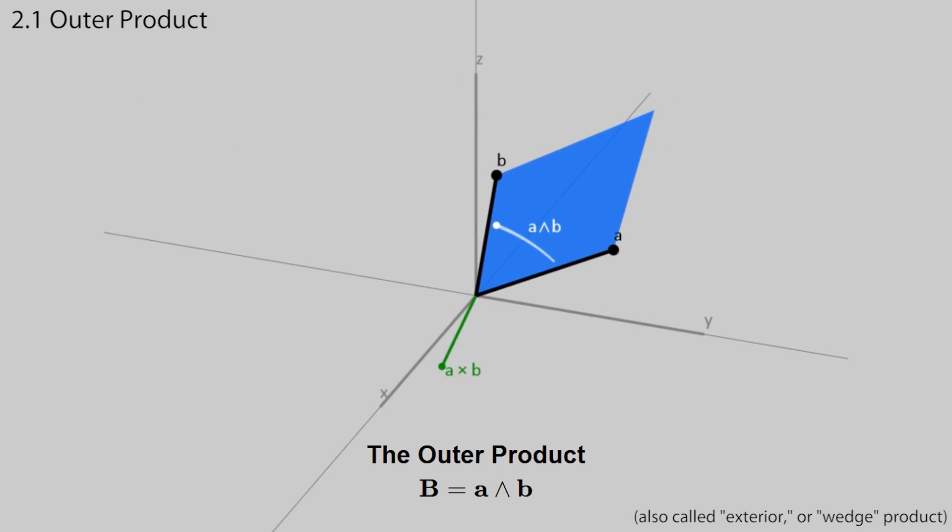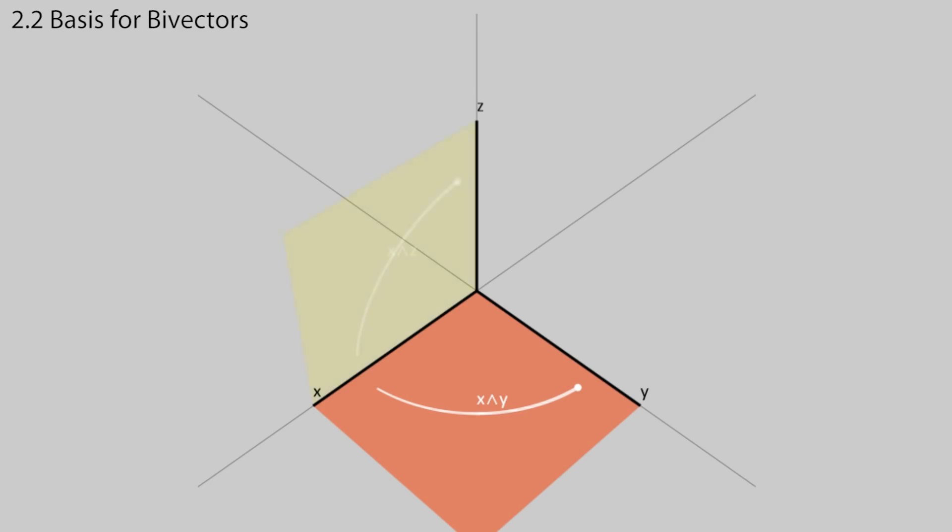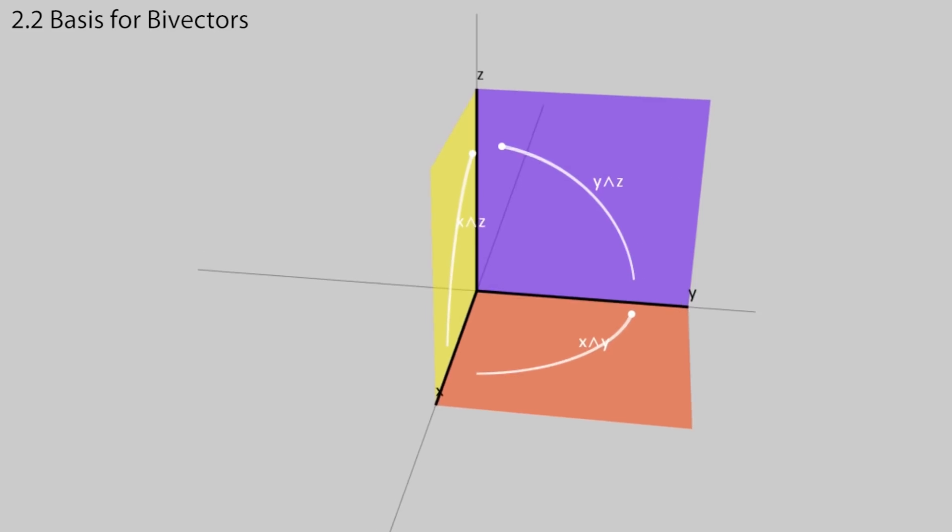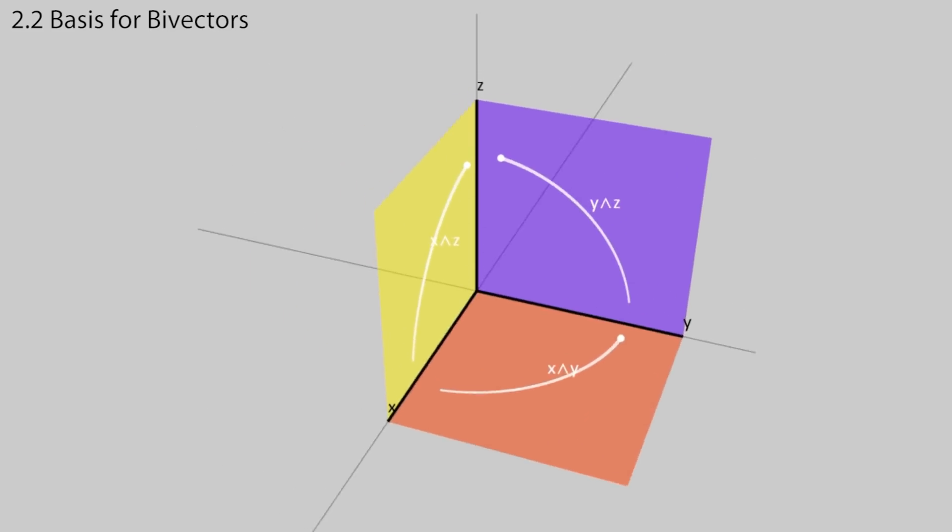The bivector b can be represented as the parallelogram built from the vectors a and b in the plane they form together. The idea of a bivector might seem strange at first, but they are pretty much as fundamental as vectors. If a vector is like a line, then the bivector is like a plane. Bivectors have components just like vectors, but they are defined in terms of basis planes instead of basis lines like vectors. The three orthogonal basis planes are xy, xz, and yz.